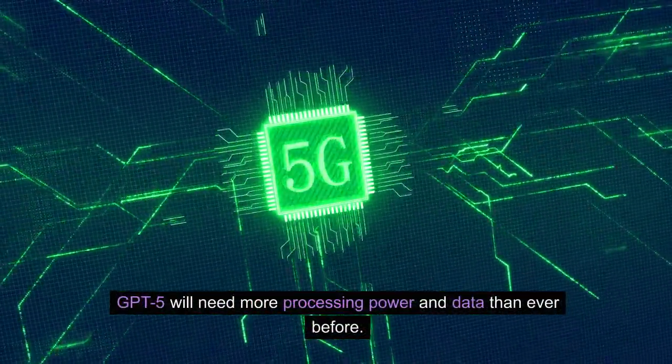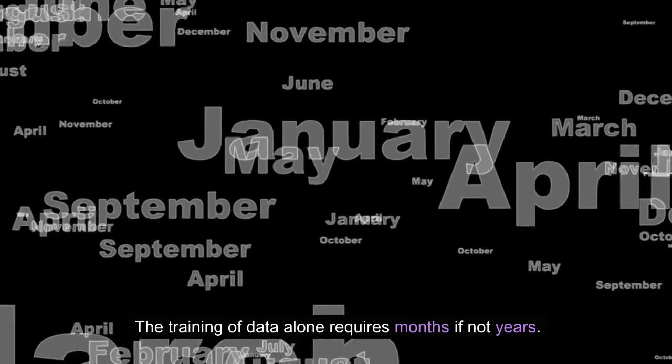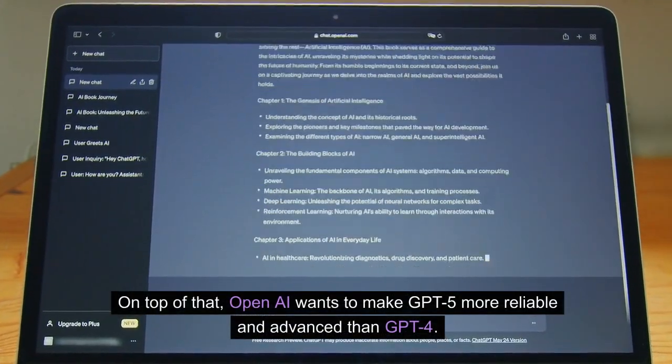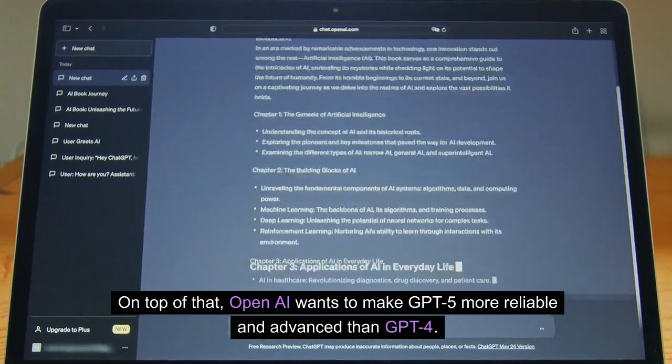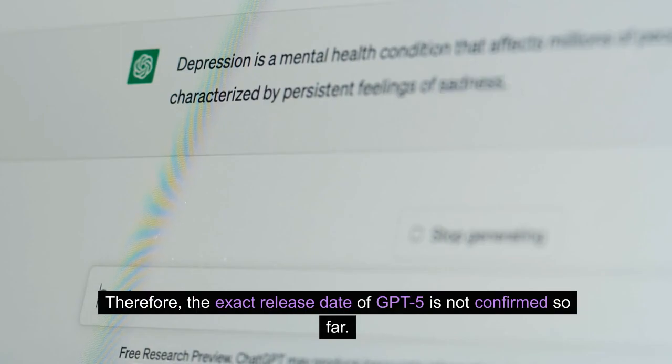GPT-5 will need more processing power and data than ever before. The training of data alone requires months if not years. On top of that, OpenAI wants to make GPT-5 more reliable and advanced than GPT-4. Therefore, the exact release date of GPT-5 is not confirmed so far.